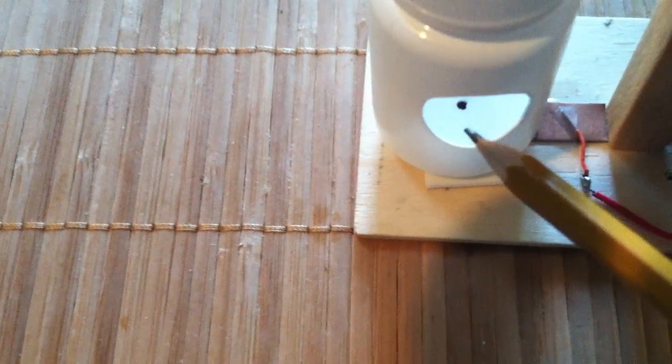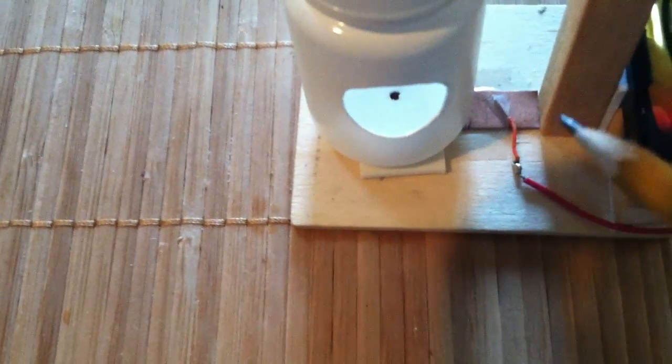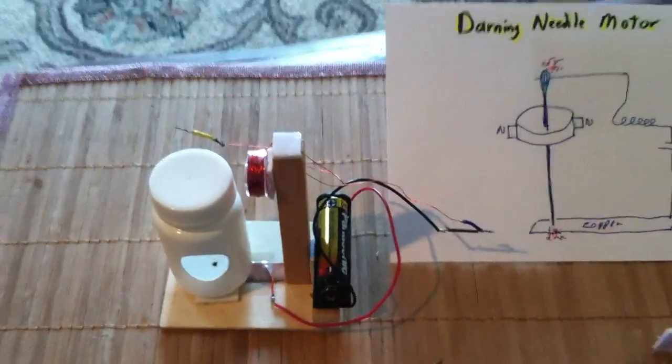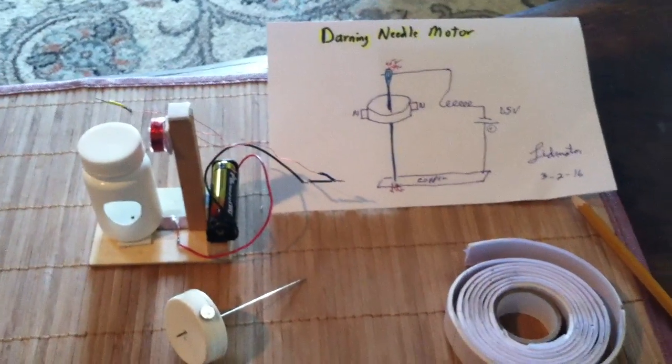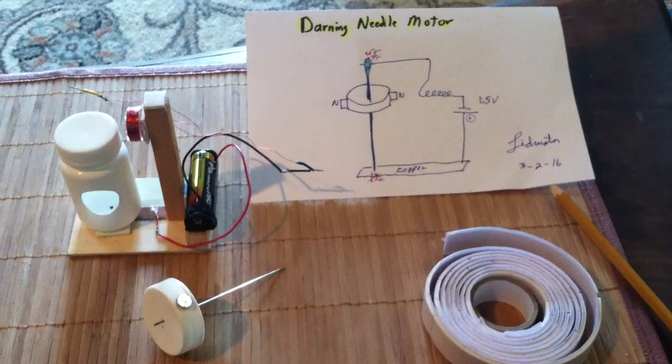And then the bottom hole has to be big enough so the needle doesn't rub at the bottom, and it has to contact this strip. But anyway, that's my darning needle motor. Thanks for watching.